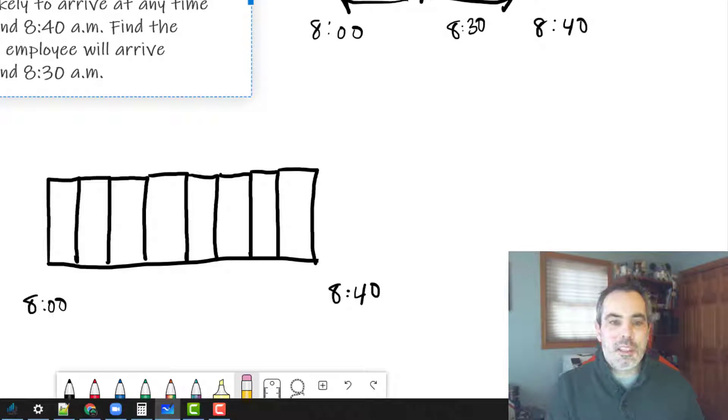He is equally likely to arrive at every point in time. Now in mine, it looks like there's only eight different numbers here.